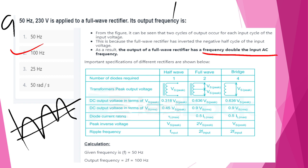Let's build a comparison table for half-wave, full-wave, and bridge rectifiers. DC output voltage, current rating, peak inverse voltage, and ripple frequency: half-wave ripple frequency = F input; full-wave and bridge both = 2 × F input.